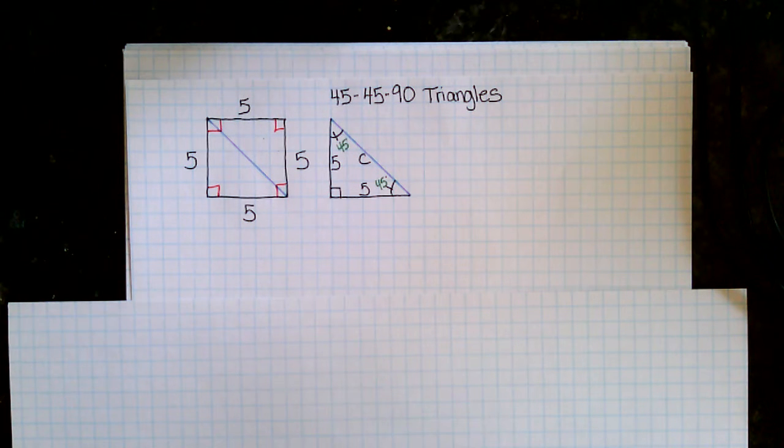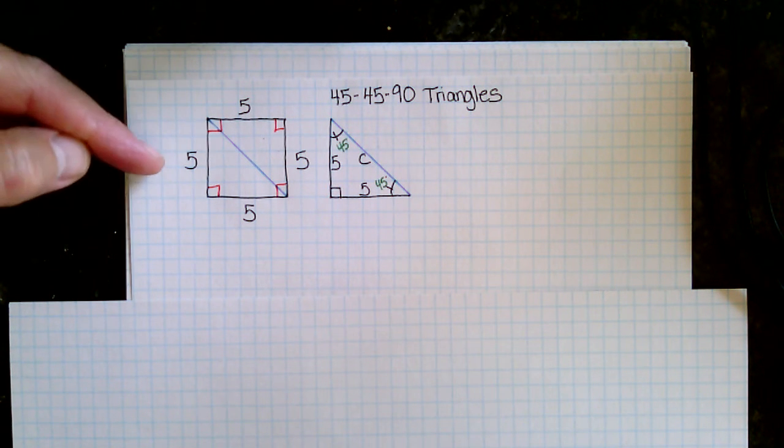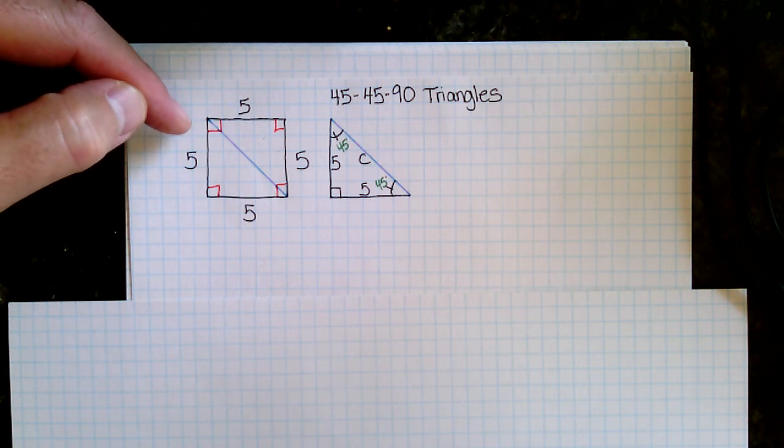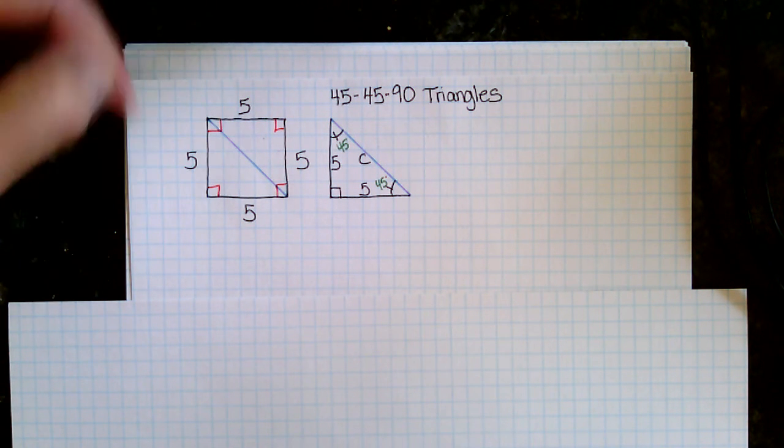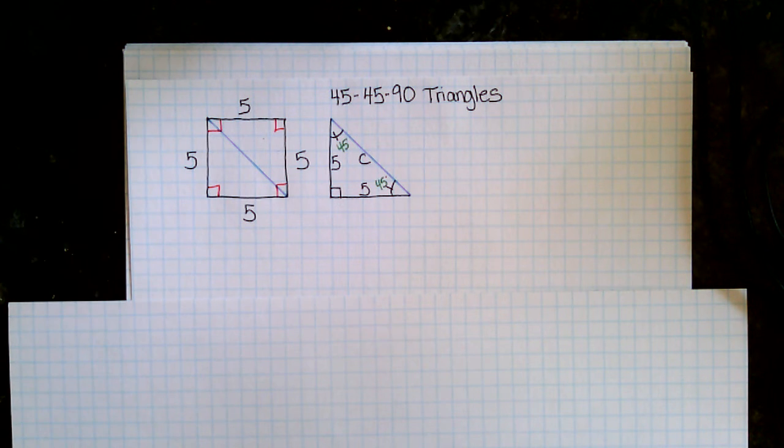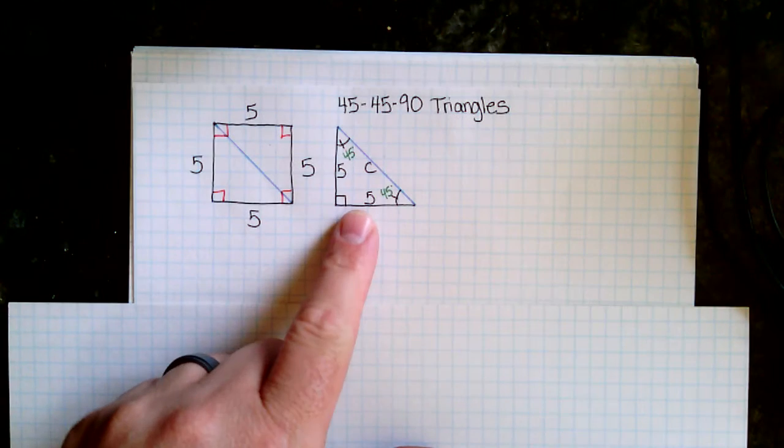Start with how the 45-45-90 can be thought of. If you start with a square, and you know the properties of a square, meaning all sides are the same, congruent, and all of the angles are congruent, and then I draw a diagonal, I get this second triangle here.